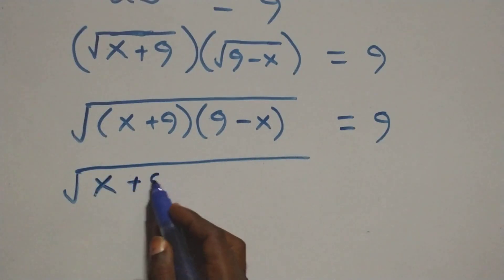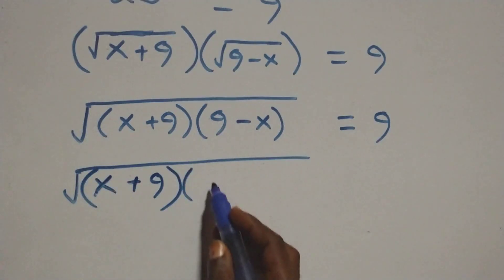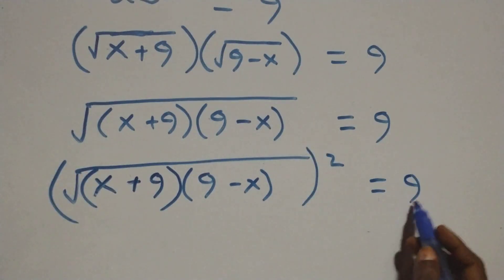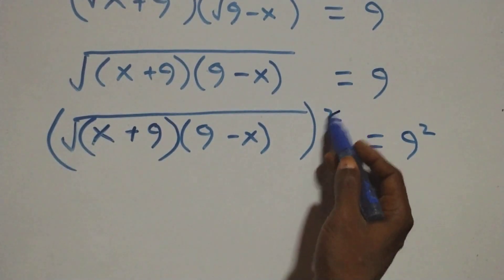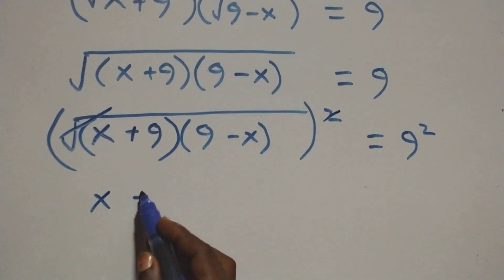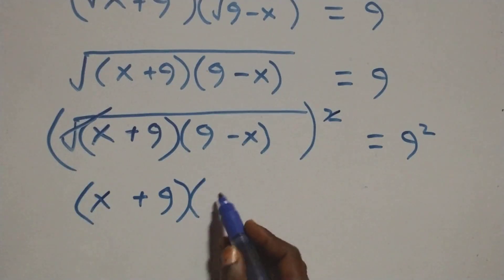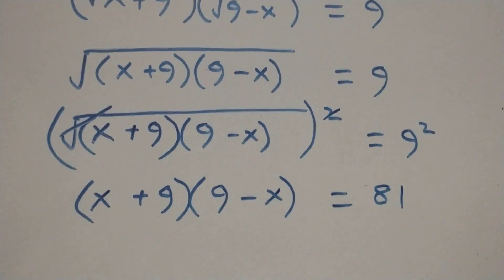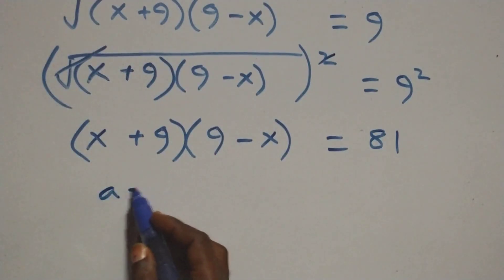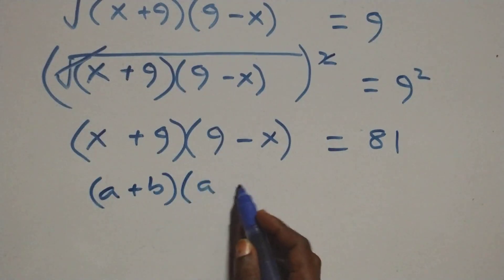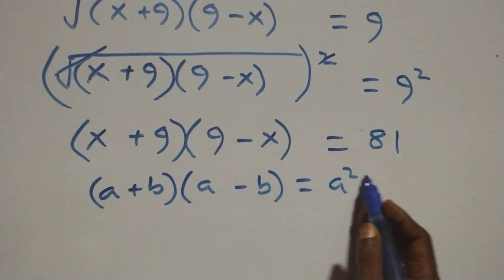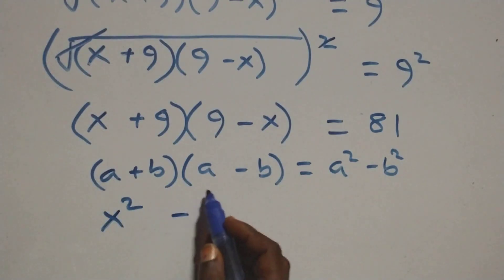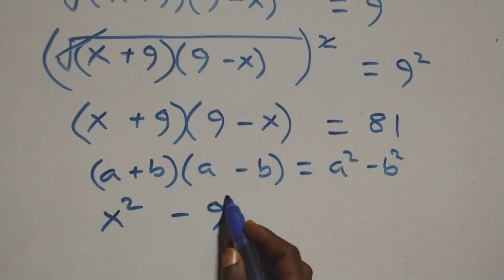We square both sides again. The square root of (x plus nine)(nine minus x), all squared, equals nine squared. This gives us (x plus nine)(nine minus x) equals 81. This follows the difference of squares pattern: (a plus b)(a minus b) equals a squared minus b squared. Here a is 9 and b is x, so we have nine squared minus x squared equals 81.